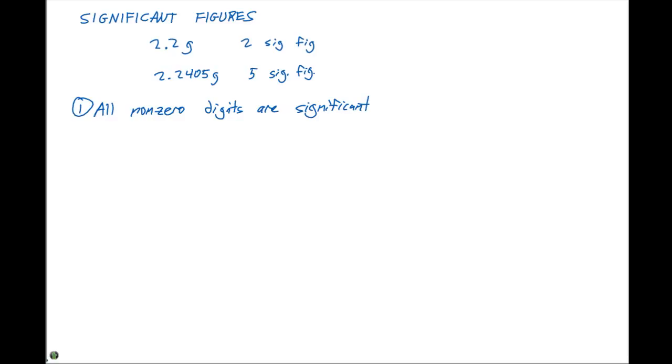Now we need to talk about what happens when you have zeros in particular numbers. This brings up a more complicated scenario. The second rule is that zeros between nonzero digits are always significant. For example, if we have 1005 kg, we have four significant figures. Or if we have 7.03 cm, here we have three significant figures. The zeros between nonzero digits are always significant.